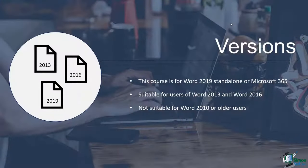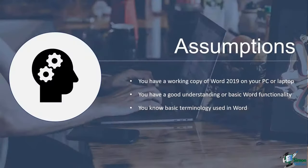This training course is predominantly designed for people using Word 2019, either the standalone desktop version or the latest version available through Microsoft 365. There is a lot of crossover with older versions, so if you're using Word 2016 or Word 2013 you should still be able to follow through without too many issues, but just be aware that some features in Word 2019 aren't available in those older versions.